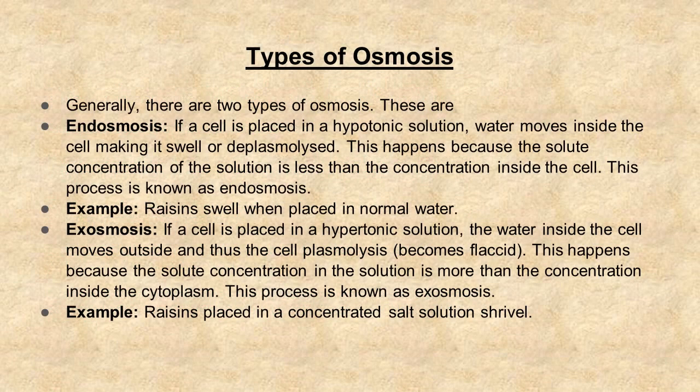Types of osmosis: generally there are two types of osmosis — endo-osmosis and exo-osmosis. Endo-osmosis: if a cell is placed in a hypotonic solution, water moves inside the cell making it swell or deplasmolyzed. This happens because the solute concentration of the solution is less than the concentration inside the cell. This process is known as endo-osmosis.